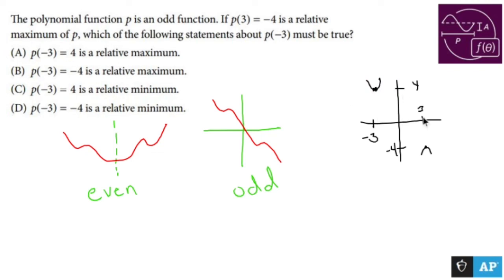So what I could say is, I don't know what the rest of this shape looks like. I could just go like that for all I care. But what I could say here is if p of 3 equals negative 4, and if that is a relative maximum, then p of negative 3 equals positive 4 is a relative minimum.